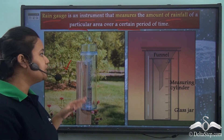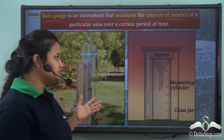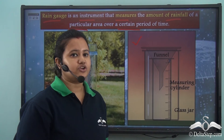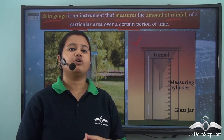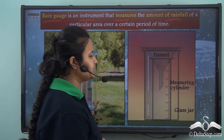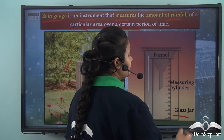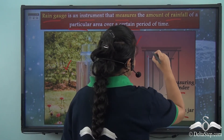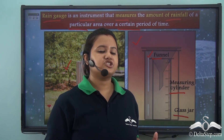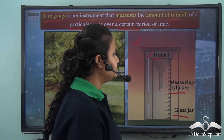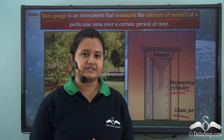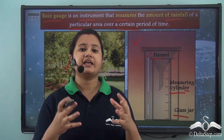This picture shows the internal structure of a rain gauge. A rain gauge is mostly composed of three main parts: a glass jar, a measuring cylinder, and a funnel. The funnel prevents splashing of rainwater, and the calibrated cylinder collects the amount of precipitation.